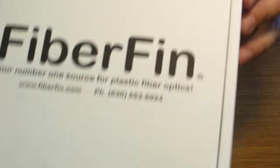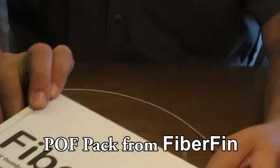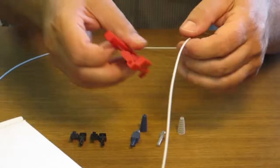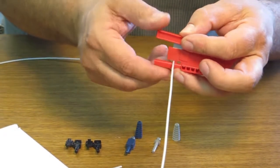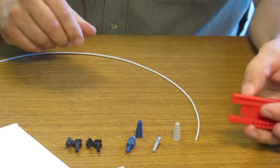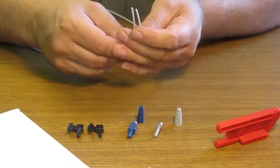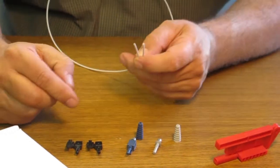You would get that in something like this, which is a POF pack from FiberFin. You can unspool whatever length of cable that you need, and then using the unique feature on the backside of the tool you can now cut it to length right out of the spool. So now you've got your one meter long piece of plastic optical fiber cable that we need to put a connector on.